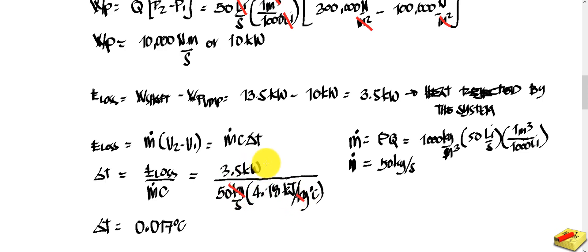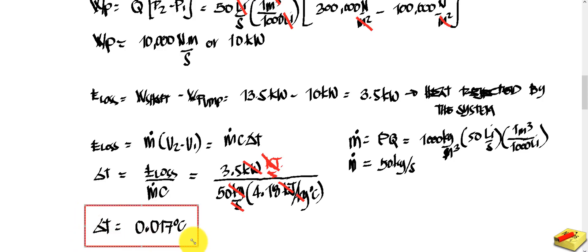After canceling units — kilojoules cancel, seconds cancel — what remains is degrees Celsius. So the rise in temperature, the change in temperature, is equal to 0.017 degrees Celsius.